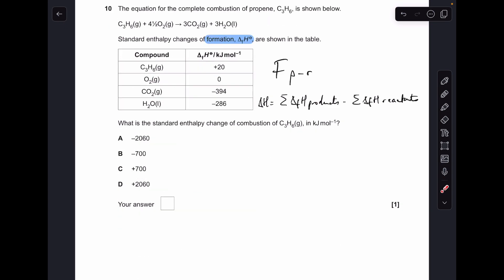Number ten: we've got a table full of enthalpy changes of formation. We're using them to calculate this enthalpy change of combustion for C3H6. So that's the formula we're going to use, but I'll just remember it as when you're using F, it's P minus R, product minus reactants. So I'll just put the numbers in and you should get minus 2060, so the answer is A.